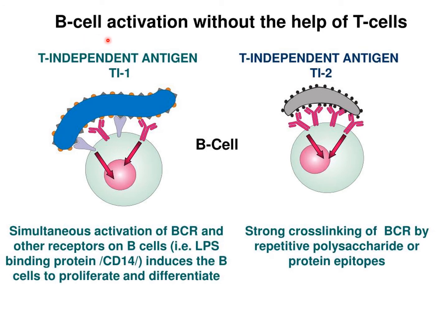B cell activation by the T independent pathway depends upon the type of antigens and the number of signals required for activation and proliferation of B cells. These signals are called TI-1 and TI-2. TI-1, or T independent antigen 1, causes activation of B cells by two signals. The first signal is provided by binding of B cell receptors to the epitope, and the second signal is provided by toll-like receptors binding to PAMPs. Simultaneous activation of B cell receptors and other receptors like CD14 induces B cell proliferation and differentiation.